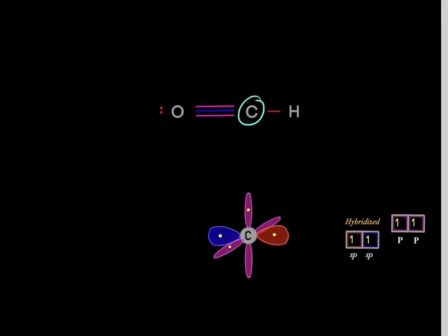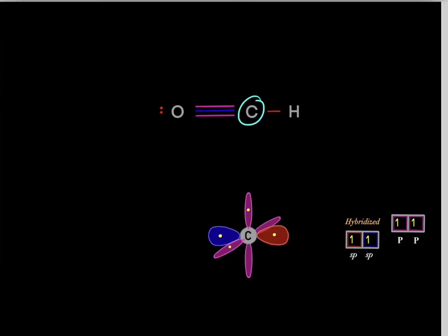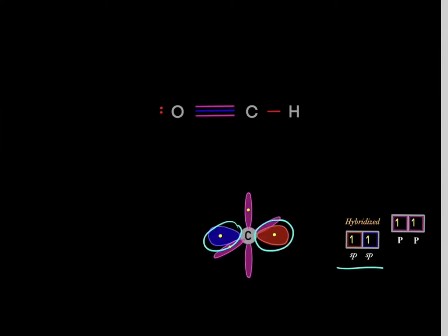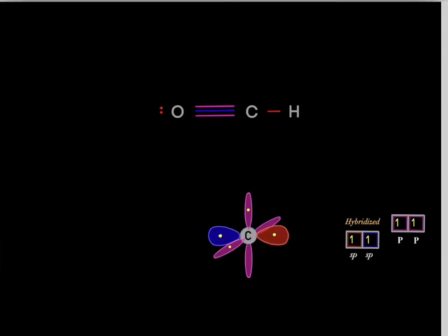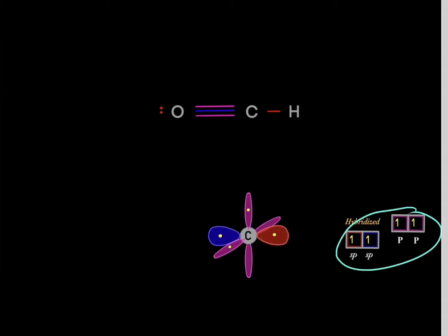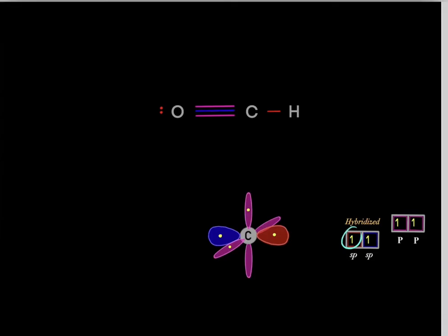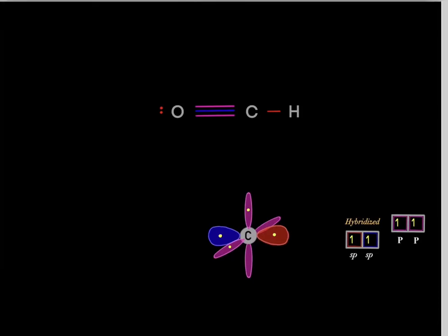Let's focus on this sp-hybridized carbon. Sp-hybridized atoms have two sp-hybridized orbitals and two unhybridized p-orbitals. Carbon has four valence electrons, so we split four electrons among these four orbitals — each orbital gets one electron.